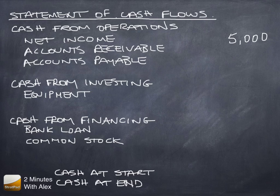Accounts receivable went up, which adversely affects our cash. Accounts payable also went up by $2,000, and when accounts payable goes up, that improves our cash position.